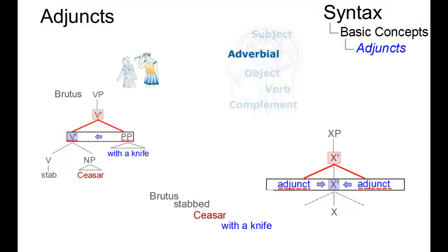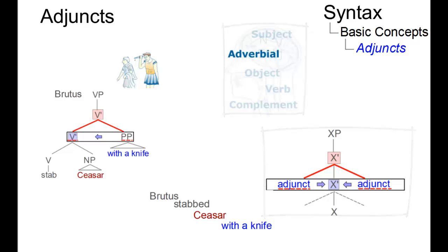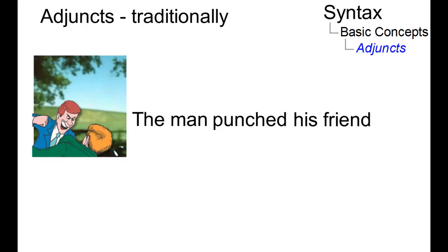The term adjunct is used to refer to an optional element in a construction. There are two interpretations of the term: a more traditional one and one that relates to X-bar syntax. According to a more general approach, adjuncts are elements of clause structure that may be removed without the structural identity of the rest of the construction being affected. The clearest example at the sentence level is the adverbial.